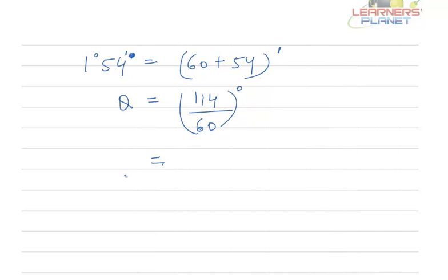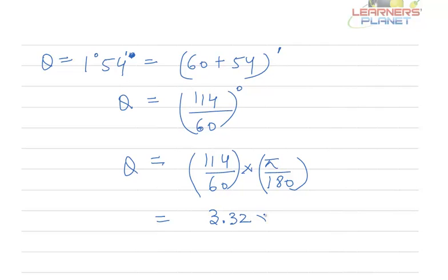This theta in terms of radians will be 114 divided by 60 into π by 180. Because in π radians there are 180 degrees. If you solve this what we will get is 3.32 × 10^-2 radians.